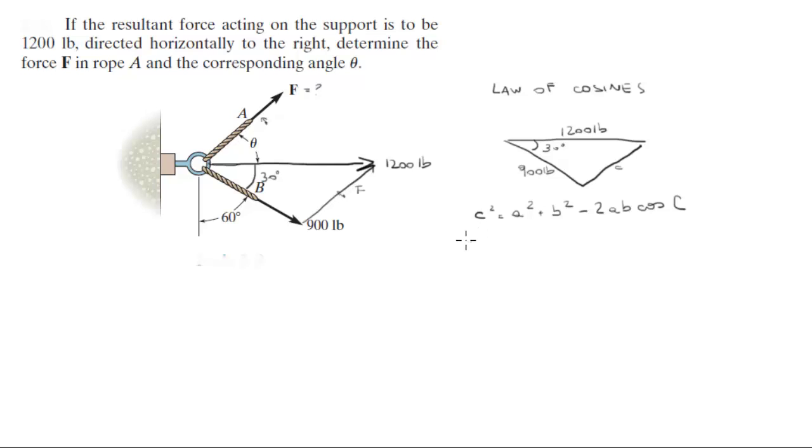You're gonna get something like this: c squared is equal to 1200 plus 900 minus 2 times 1200 times 900 cosine of 30. When you solve all this and then you square root it, you're gonna get c is equal to 615.94 pounds.